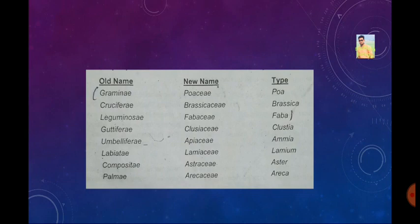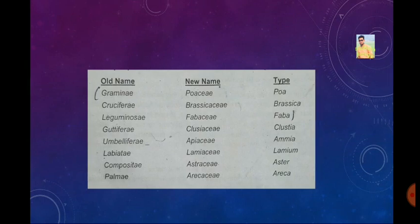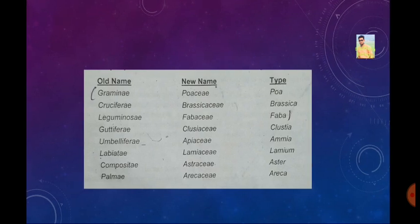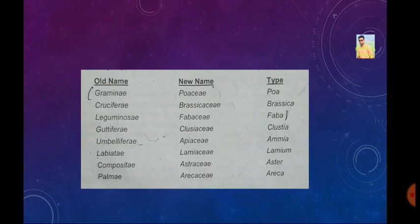The 8 conserved families are: Gramineae (new name Poaceae, type Poa); Cruciferae (new name Brassicaceae, type Brassica); Leguminosae (new name Fabaceae, type Faba); Guttiferae (new name Clusiaceae, type Clusia); Umbelliferae (new name Apiaceae, type Apium); Labiatae (new name Lamiaceae, type Lamium); Compositae (new name Asteraceae, type Aster); and Palmae (new name Arecaceae, type Areca).